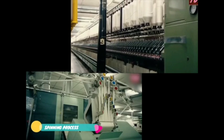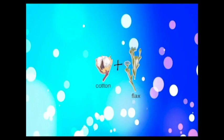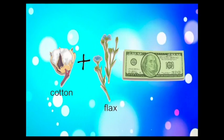Fibers come from plants and animals. Cotton and flax grow on plants. Money is made from cotton and flax fibers.